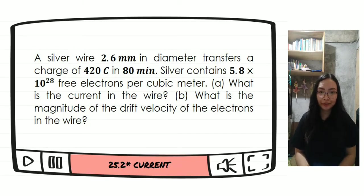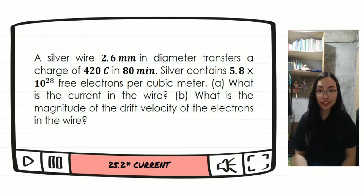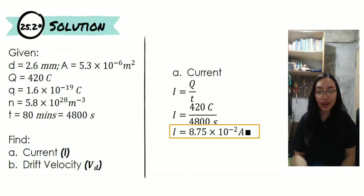The first problem is from item 25.2, which deals with current. The problem is: a silver wire, 2.6 millimeters in diameter, transfers a charge of 420 coulombs in 18 minutes. Silver contains 5.8 times 10 to the 28 free electrons per cubic meter. Part A: what is the current in the wire? Part B: what is the magnitude of the drift velocity of the electron in the wire? Just like in our first video, we need to enumerate the given.